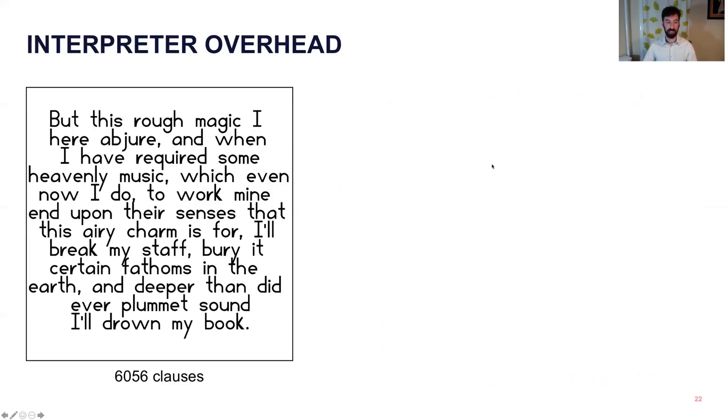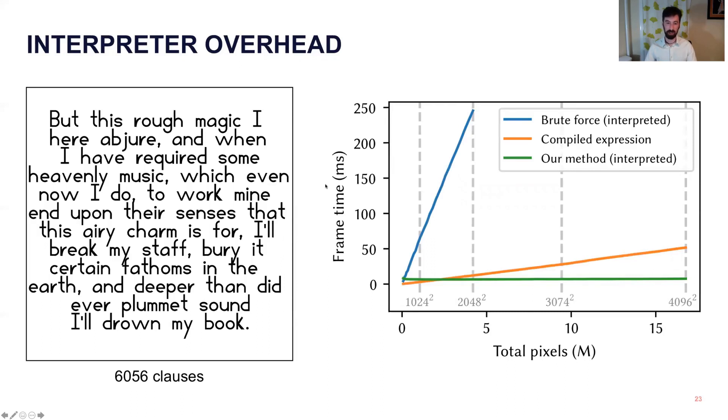And so we can look at how efficient this is by taking this equation here, which is built from about 6,000 clauses and produces a monologue from the tempest, and rendering it with the brute force kernel we talked about earlier. So just every pixel, compile a kernel with this equation, and then compare that against running the interpreter on every single pixel and seeing how this scales. And so both the brute force and the interpreter are roughly linear with the number of pixels. The brute force in orange has a smaller slope because it's more efficient, and so we see about a 19x overhead if we compare the two slopes. The motivation here, by the way, is looking at the green line is our full algorithm, which is basically flat all the way up to 4,000 pixels squared.